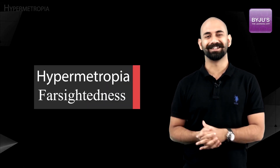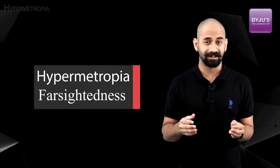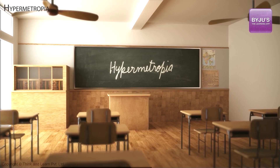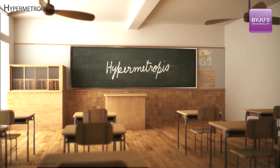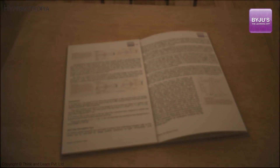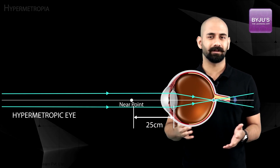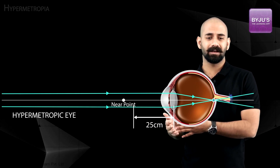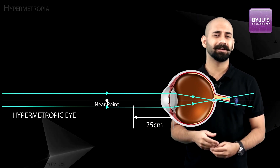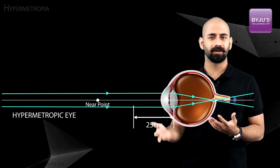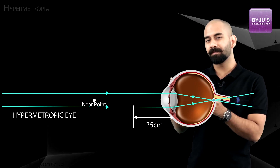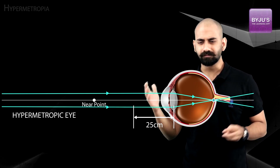As the name suggests, hypermetropia is the opposite of myopia. A hypermetropic eye can focus on distant objects easily but cannot focus on close ones. This means the near point of a hypermetropic eye is greater than 25 centimeters — it could be 30, 35, or even 100 centimeters or more, depending on the degree of the defect.